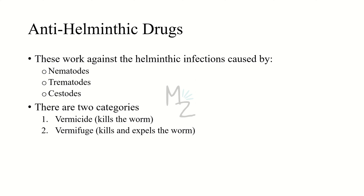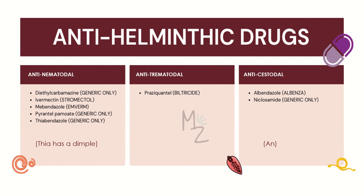Anti-helminthic drugs work against helminthic infections caused by nematodes, trematodes, and cestodes — helminths are worms. There are two categories: vermicide, which kills the worm, and vermifuge, which not only kills but also expels the worm from the body. Anti-helminthic drugs are classified into anti-nematodal, anti-trematodal, and anti-cestodal.